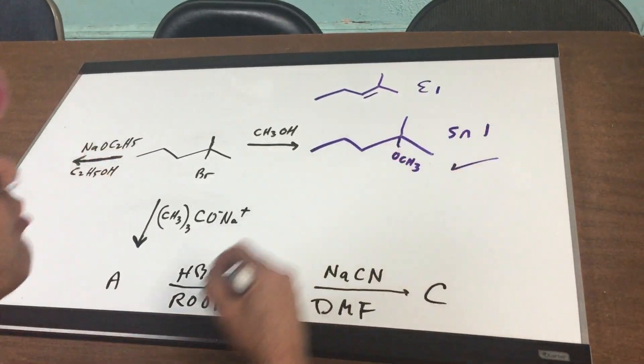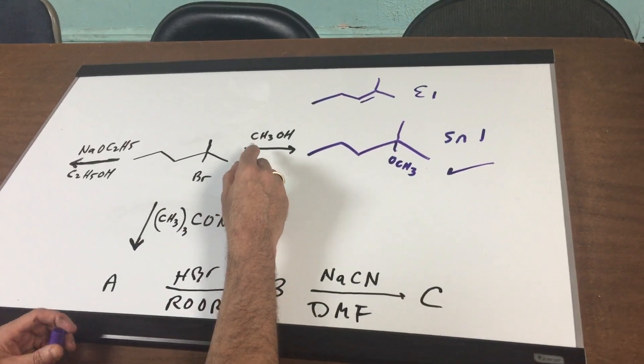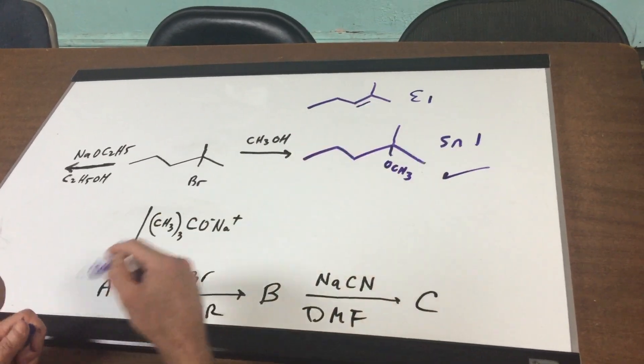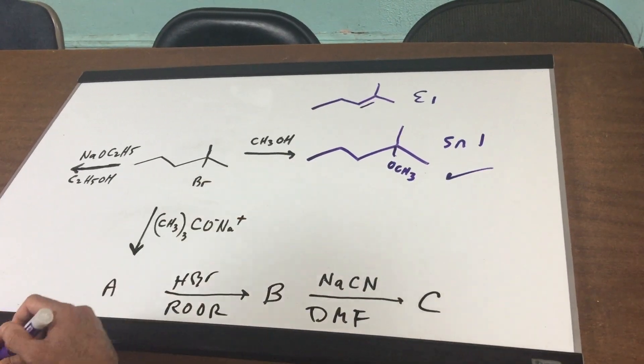SN1 would be the major product. E1 would be the minor, but if you would have heated this up, then E1 would have been the major and SN1 would have been the minor product.